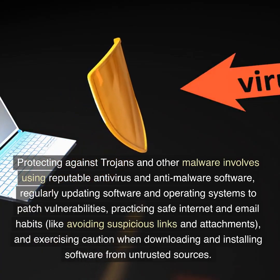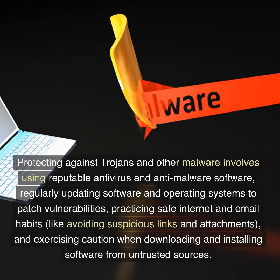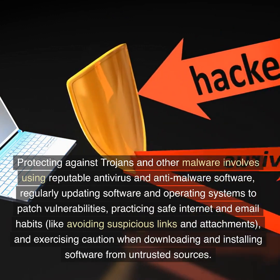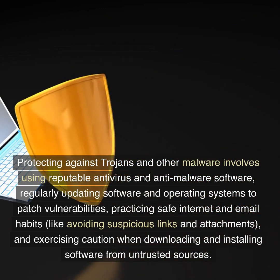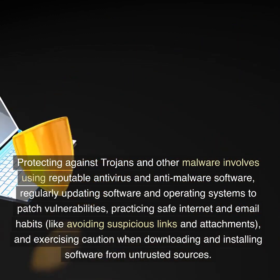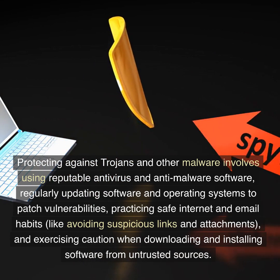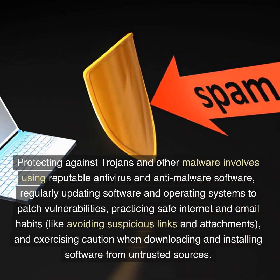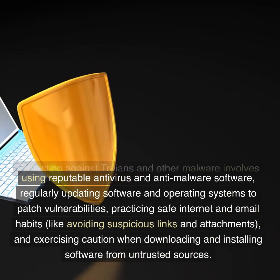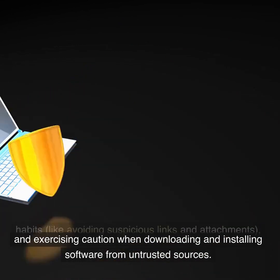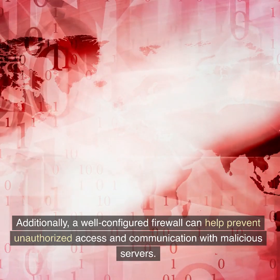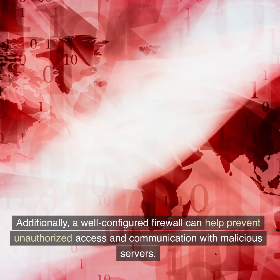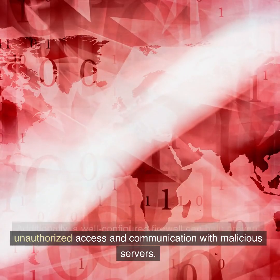Protecting against trojans and other malware involves using reputable antivirus and anti-malware software, regularly updating software and operating systems to patch vulnerabilities, practicing safe internet and email habits — like avoiding suspicious links and attachments — and exercising caution when downloading and installing software from untrusted sources. Additionally, a well-configured firewall can help prevent unauthorized access and communication with malicious servers.